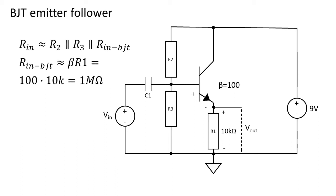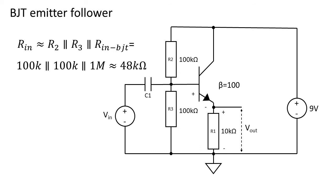The value of R2 and R3 has to be chosen so the quiescent current isn't too large, but the resistance isn't too high. 100k ohm is an alright value. The resulting input impedance is now about 48,000 ohms.